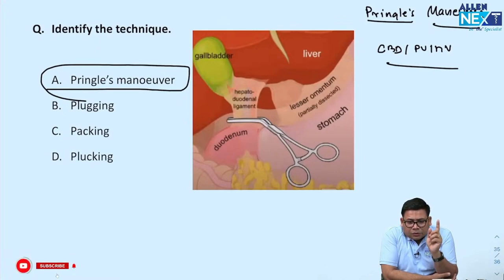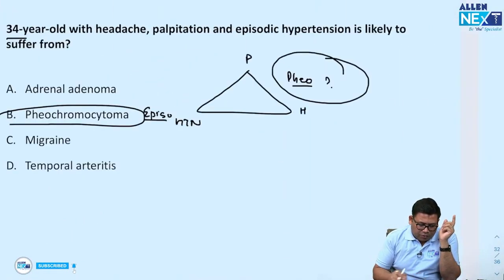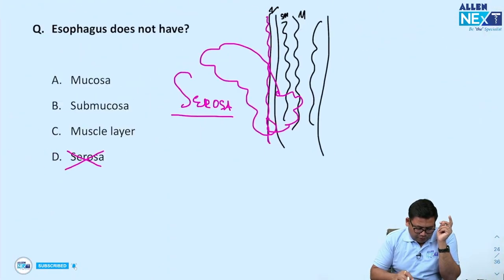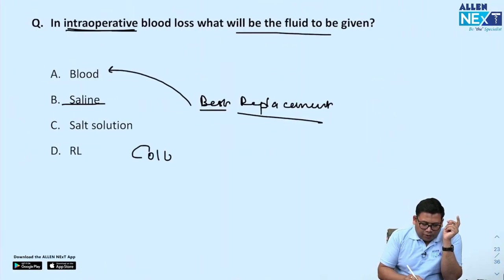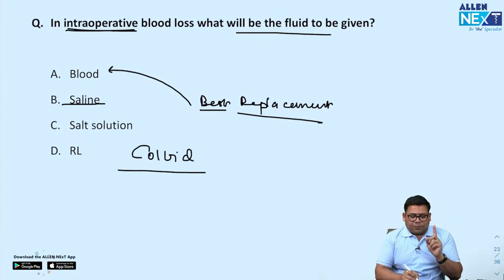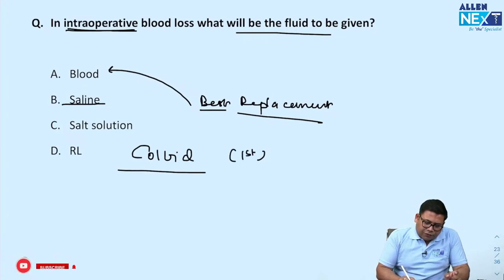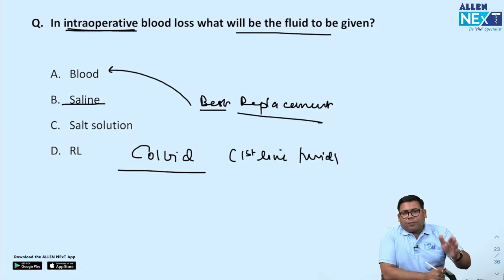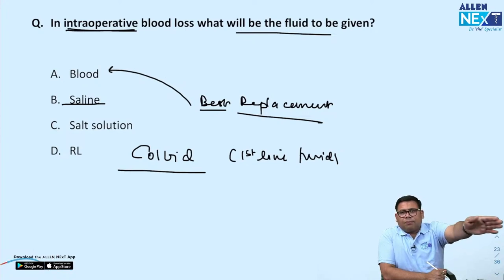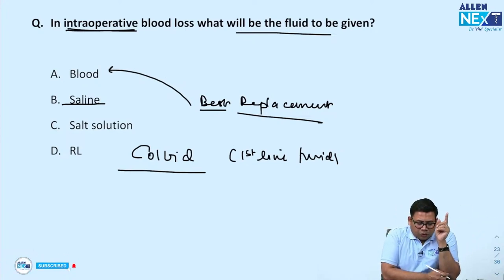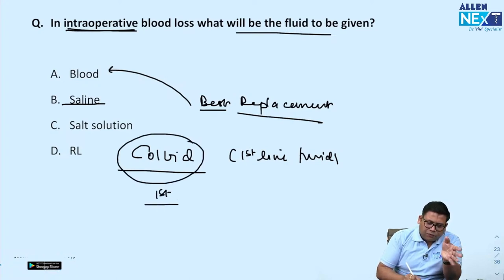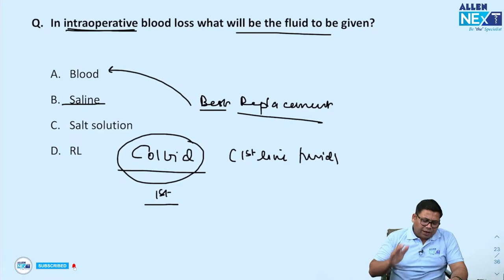Preferred fluid intraoperatively — options were blood, NS, and colloid. The best replacement is blood with blood. However, intraoperatively the patient is already on crystalloid saline. If intraoperative bleeding starts, the first line response fluid is colloid — because it counters sudden intraoperative hypotension while blood is being arranged and cross-matched. The most preferred fluid overall remains blood. Colloid is the immediate bridge while blood is being prepared.